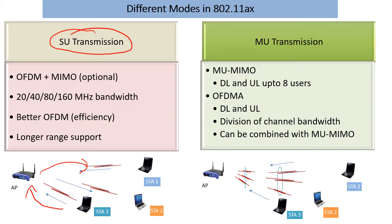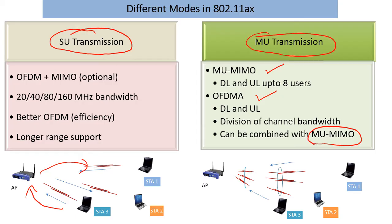When do scheduled transmissions come into play? Scheduled transmissions come into play when we have multi-user transmissions, and they are of two types: MU-MIMO and OFDMA — and technically it could be OFDMA plus MU-MIMO. So you could say it's three types, with this last type probably coming in a little later.